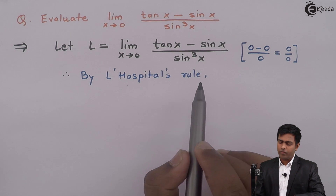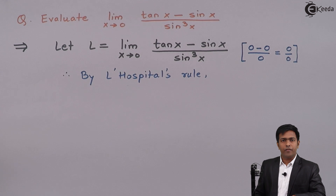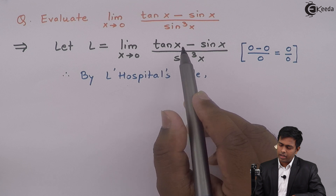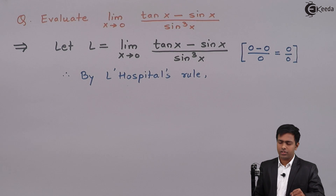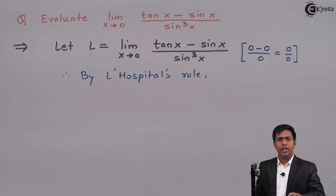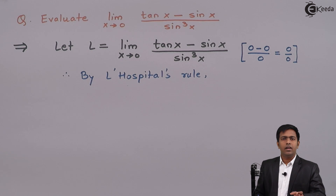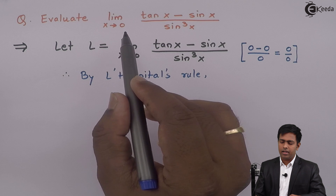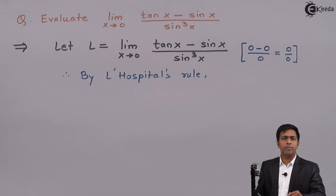By L'Hôpital's rule we find the derivative of the numerator and denominator separately. However, if you observe the given function, both numerator and denominator contain transcendental functions. The derivative of sin cube x gives 3 sin square x times cos x, and further derivatives will make the expression increasingly complex, taking more time to reduce the limit. So I will apply a different approach using substitution to make evaluation easier.